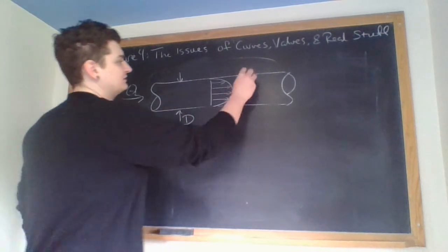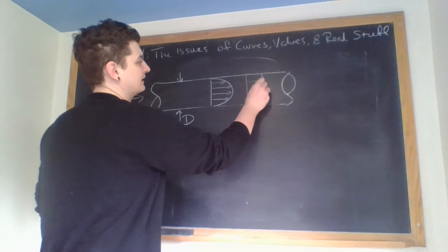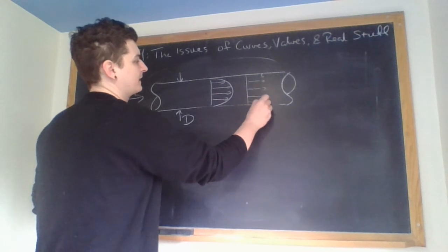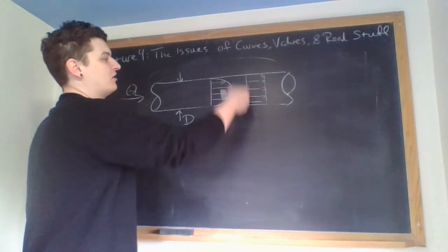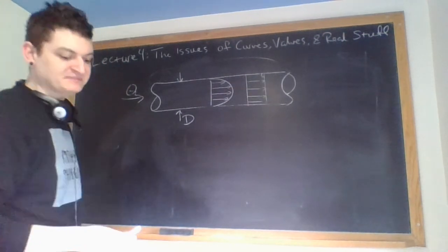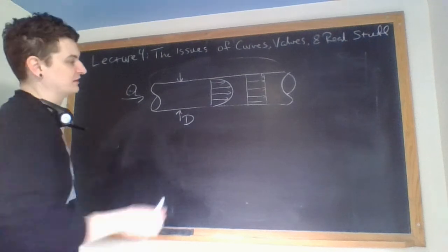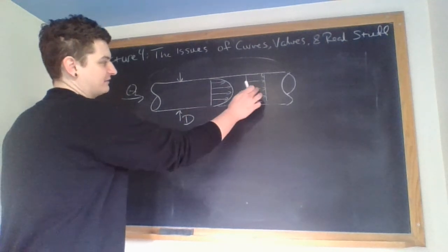Inviscid flows look like this. If there's no viscous forces, then all velocity profiles just be constant. But really this is what's happening in the pipe, but I'm going to say something about this.